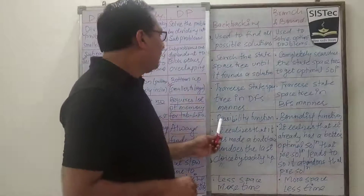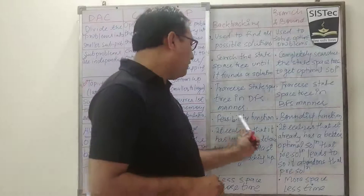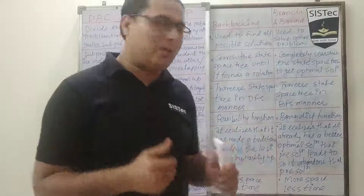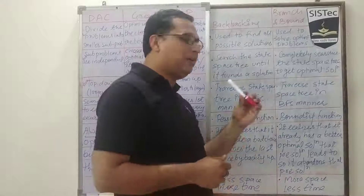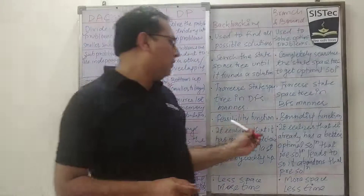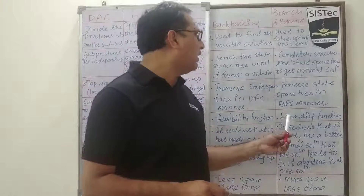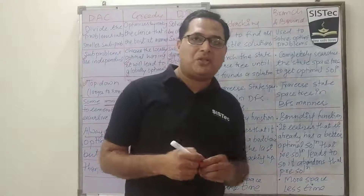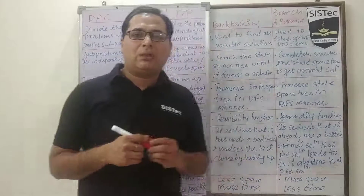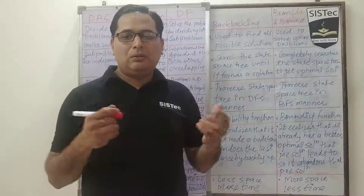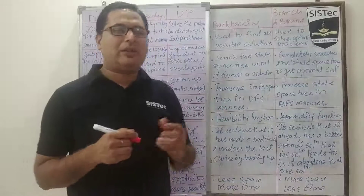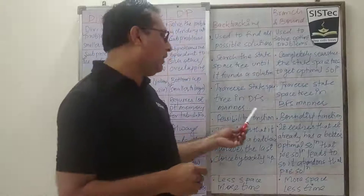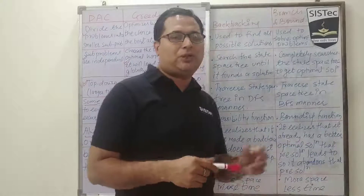In backtracking, we talk about the feasibility function — we check whether the constraint is satisfied or not. That's why we use the feasibility function. Whereas in the case of branch and bound, since we are interested in optimization, we need some kind of comparative values. That's why we use upper bound or lower bound values — we use bounding functions for comparison.